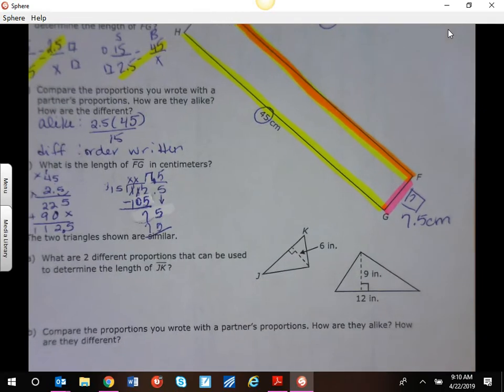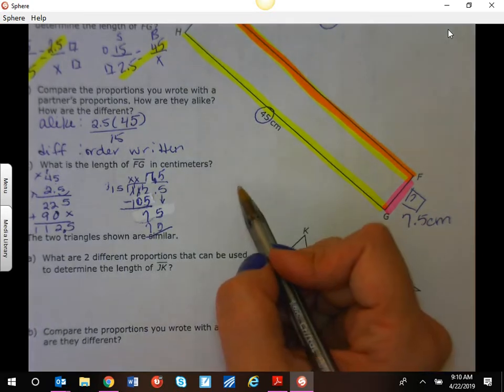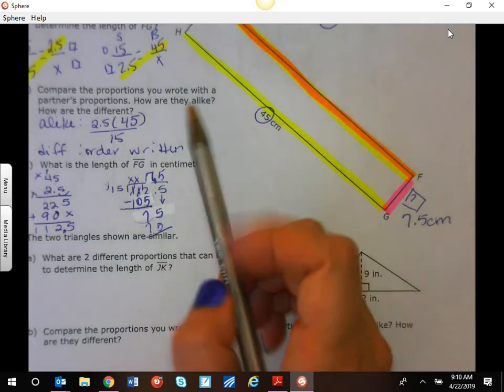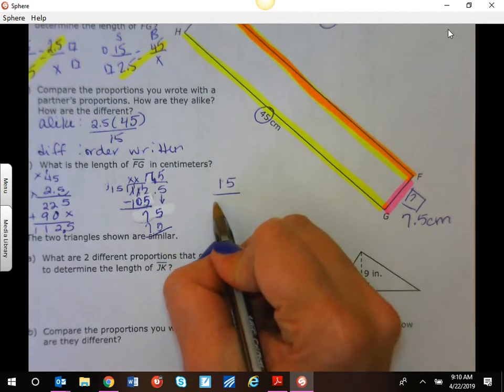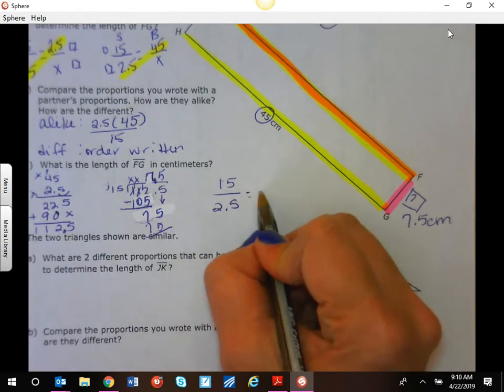Now one of the other ways you could do this based on our proportion, I'm going to rewrite this one right here. We talked about cross-multiply-divide will work 100% of the time.